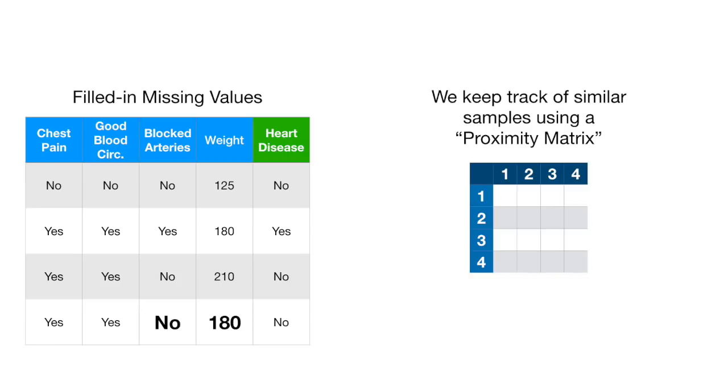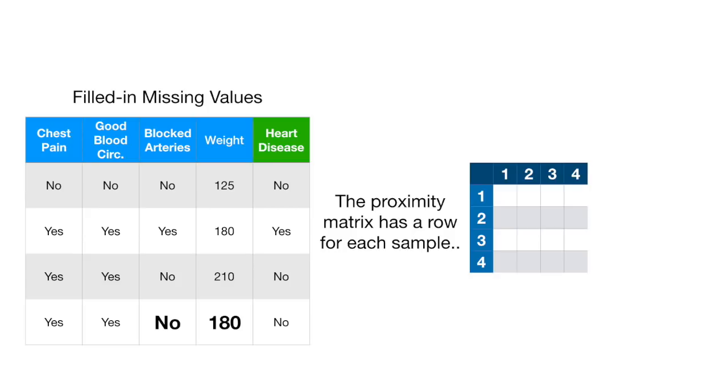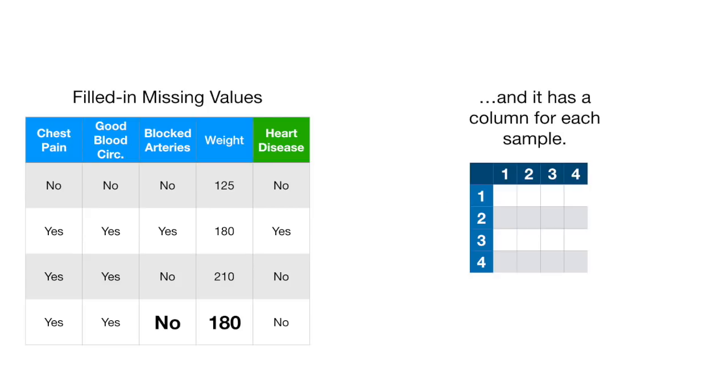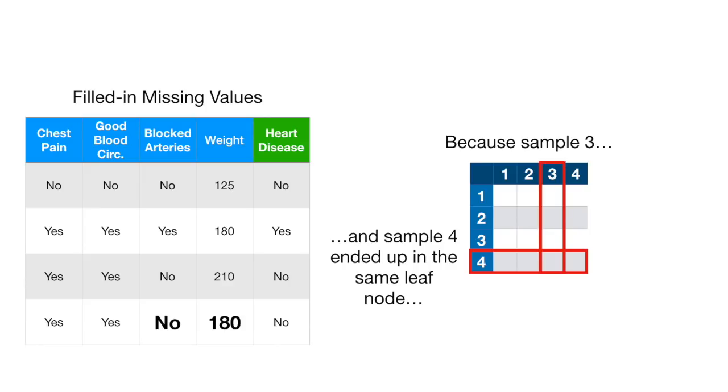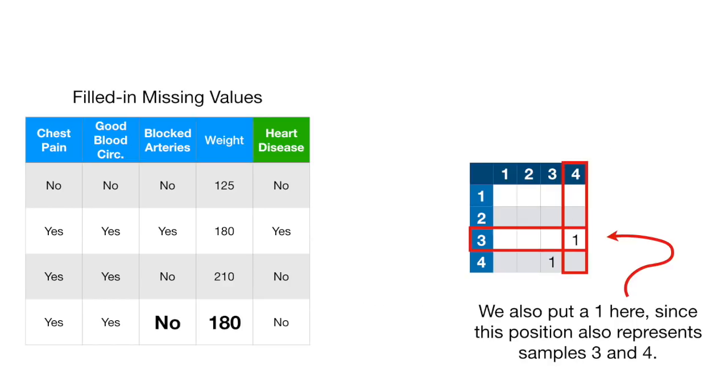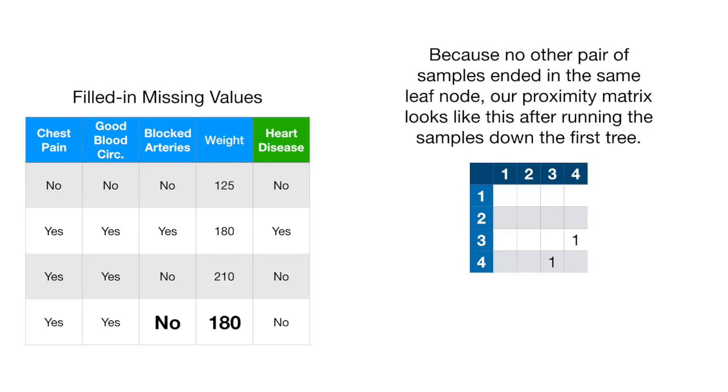We keep track of similar samples using a proximity matrix. The proximity matrix has a row for each sample, and it has a column for each sample. Because sample three and sample four ended up in the same leaf node, we put a one here. We also put a one here, since this position also represents samples three and four. Because no other pair of samples ended in the same leaf node, our proximity matrix looks like this after running the samples down the first tree.